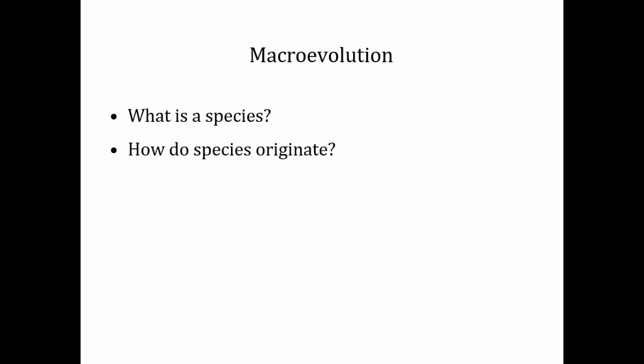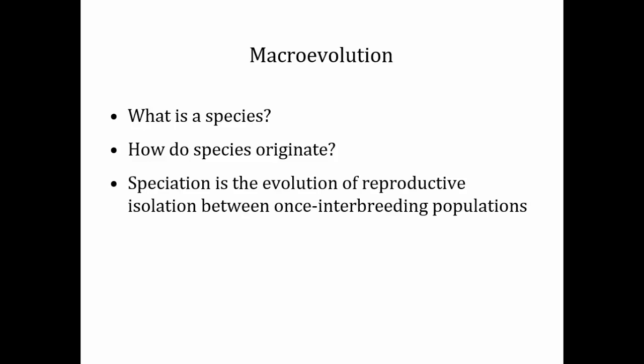Once you figure out what a species is, then the question of macroevolution — or how species come about — is this fundamental question of speciation. How do species originate? When species can no longer produce viable offspring, then according to the biological species concept they are different species. So in essence, speciation is the evolution of reproductive isolation between once interbreeding populations.